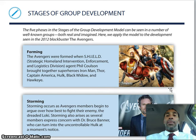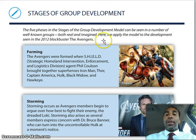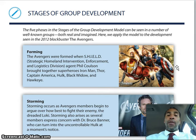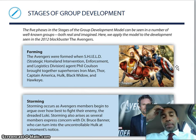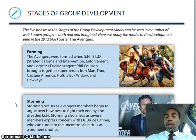I personally love comic books, so I was happy to see the Avengers used to illustrate stages of group development. In the forming stage, SHIELD — Strategic Homeland Intervention Enforcement and Logistics Division — brought together Iron Man, Thor, Captain America, Hulk, Black Widow, and Hawkeye. In the storming phase, the Avengers begin to argue on how to best fight Loki, and several members express concern about Dr. Bruce Banner, who can turn into the uncontrollable Hulk.